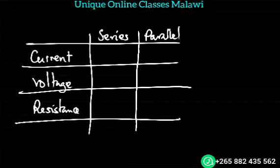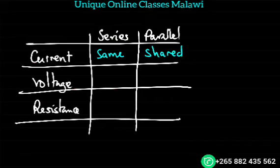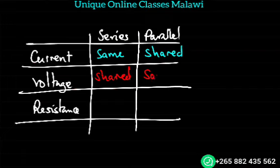The current in parallel is shared — the opposite is true with the voltage. In series, voltage is shared. The voltage in parallel is the same. The resistance in series increases, and in parallel the resistance decreases.